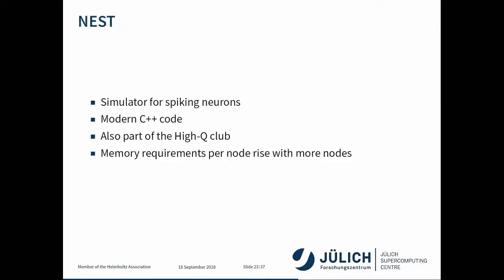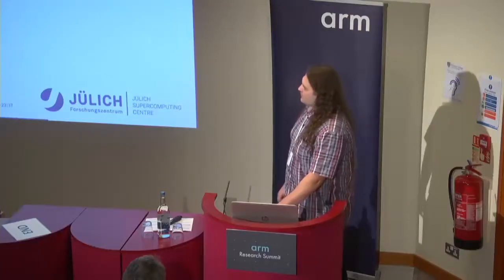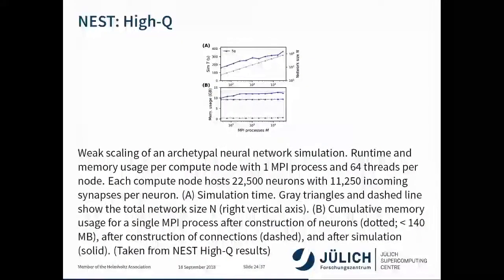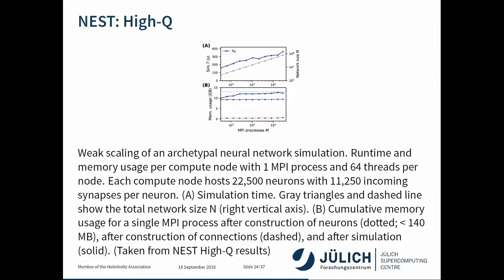The next code I want to talk about is NEST. This is a modern C++ code, a simulator for spiking neurons. It's part of the HiQ club as well, and it has the specific property that if you increase the number of MPI processes, the memory requirements per MPI process will go up. The top graph shows weak scaling — runtime with increasing MPI processes and network size — and the other graph shows the memory consumption phenomenon increasing per node.